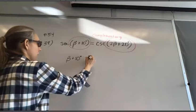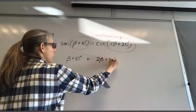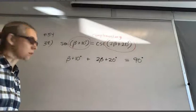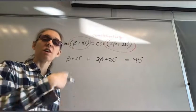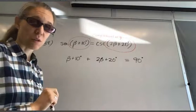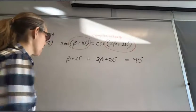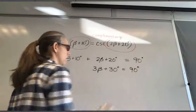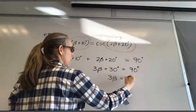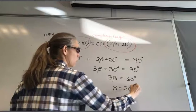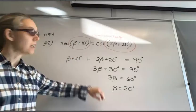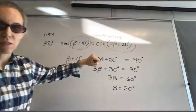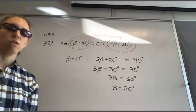So beta + 10 and 2 beta + 20 must add up to 90 degrees, just as 10 and 80 or 20 and 70 added to 90. Setting up the equation: 3 beta + 30 = 90, so 3 beta = 60 and beta = 20. Checking: plugging 20 in gives 30 degrees and 60 degrees, which are complementary. So we know we did this correctly.